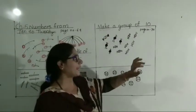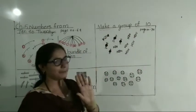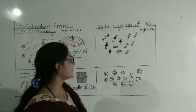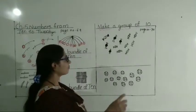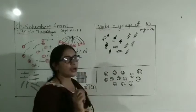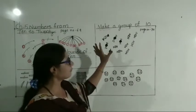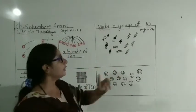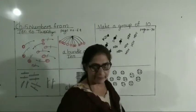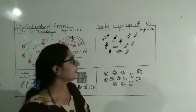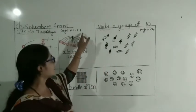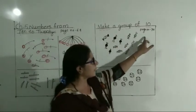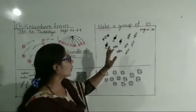Make a group of ten. Here first what you have to do, students — here some top pieces are there. This is page number 70. Page number 69 is completed. Here now page number 70.